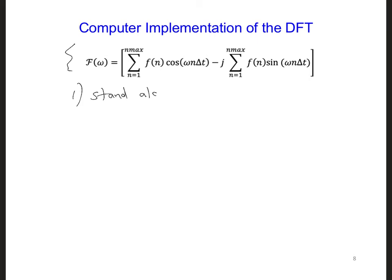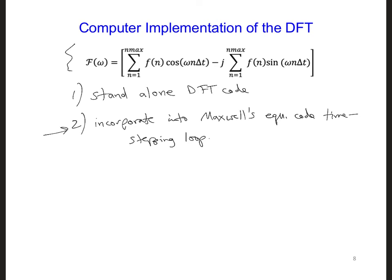We can either write a standalone, so a separate DFT code. So this would be separate from the Maxwell's equations model we've been building. Or two, we can incorporate it into the Maxwell's equations model code. And specifically, that would go directly into the time stepping loop. This is called an on-the-fly DFT. The benefit of the second option is that we can easily calculate the DFT of the source waveform, as well as any other electric or magnetic fields from our simulation. So we're not limited to only taking the DFT of the source. However, the drawback of this second option is that we have to run the entire FDTD code every time we want to perform the discrete Fourier transform.